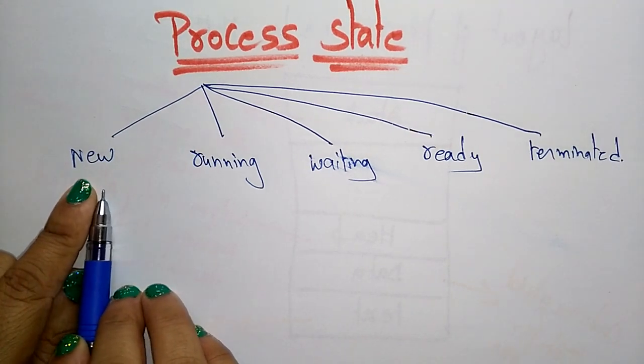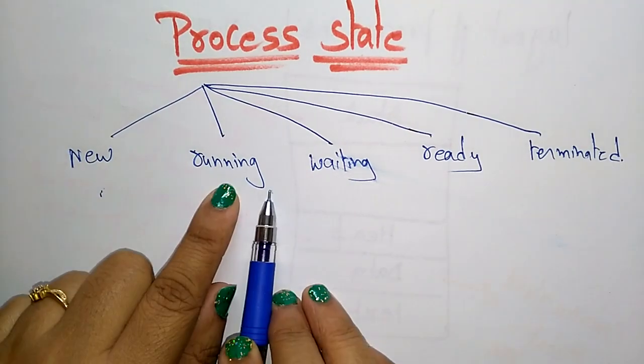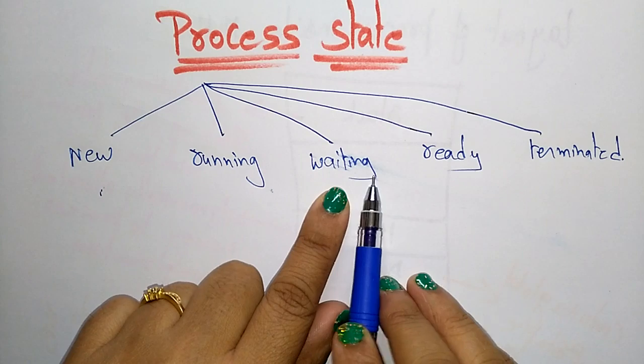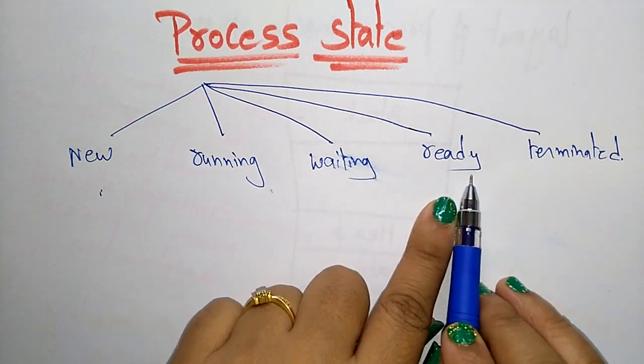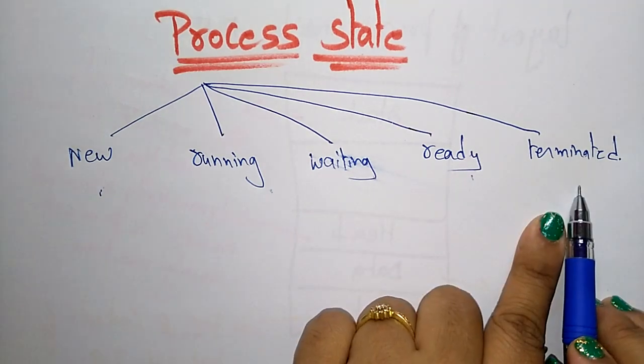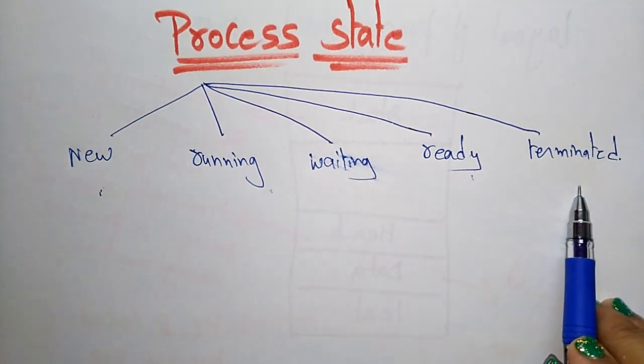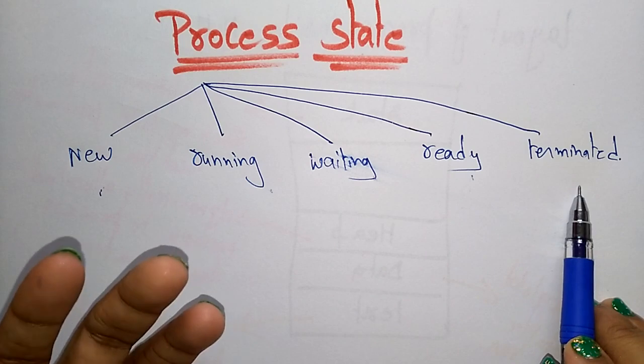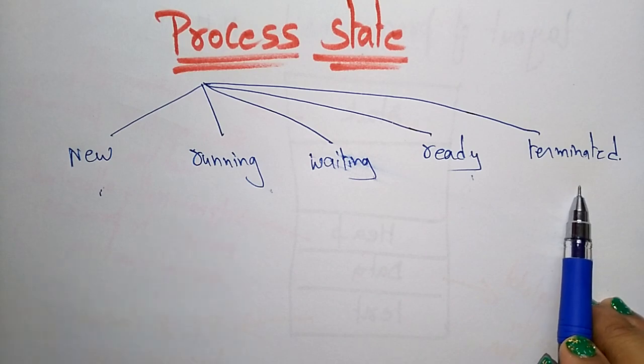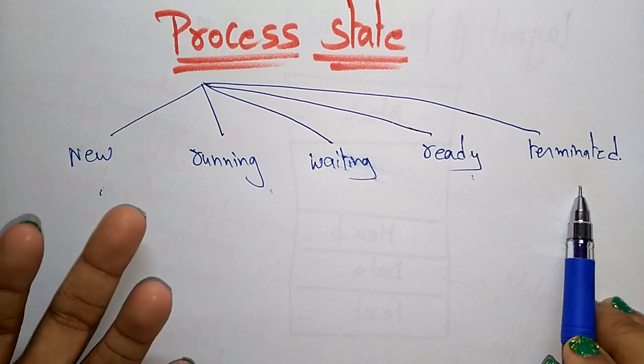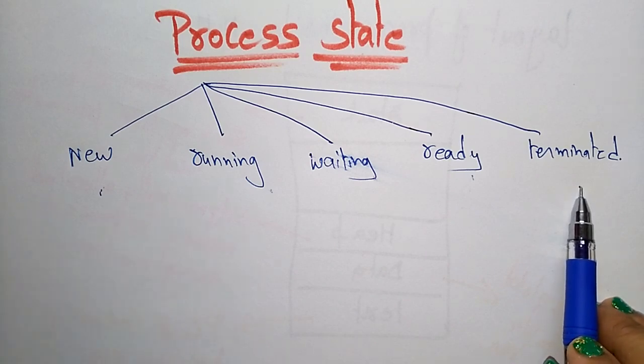These are the different states that a process moves through while executing: new state, running state, waiting state, ready state, or terminated state. It is changing its behavior — just like human beings.